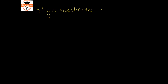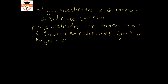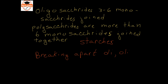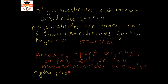Oligosaccharides are three to six monosaccharides joined together. Polysaccharides are more than six monosaccharides joined together. There is a special name for polysaccharides, and that special name is starches. Breaking apart di-, oligo-, or polysaccharides into monosaccharides is called hydrolysis, where 'lysis' means to break and 'hydro' means water.